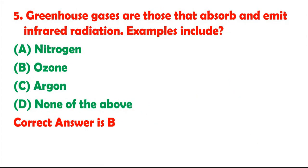Question 5: Greenhouse gases are those that absorb and emit infrared radiation. Examples include: A. Nitrogen. B. Ozone. C. Argon. D. None of the above. Correct answer is B.